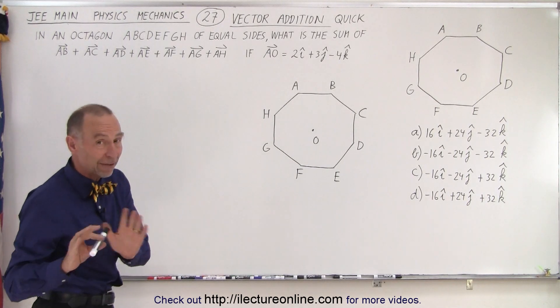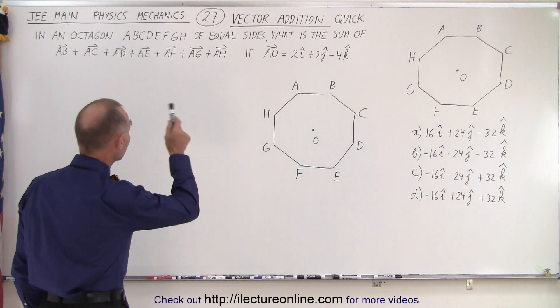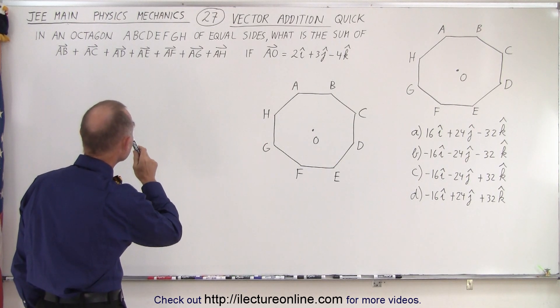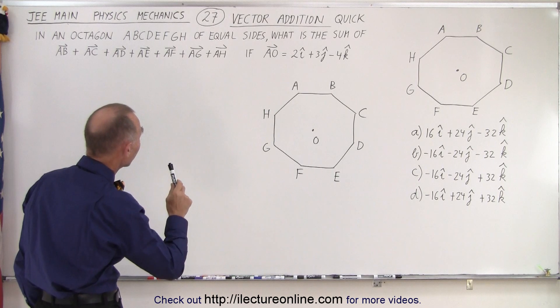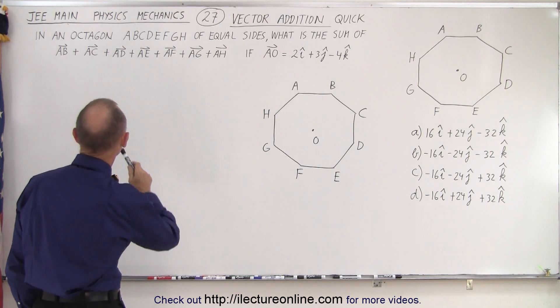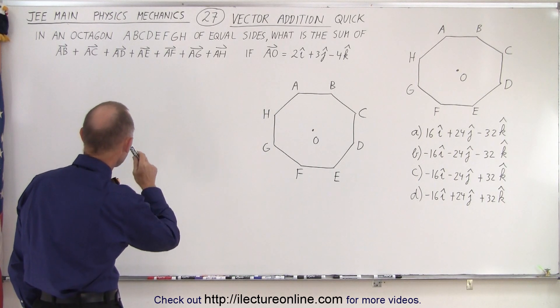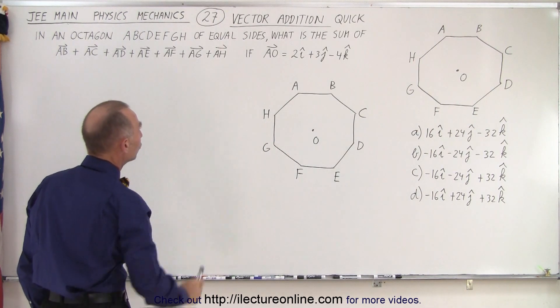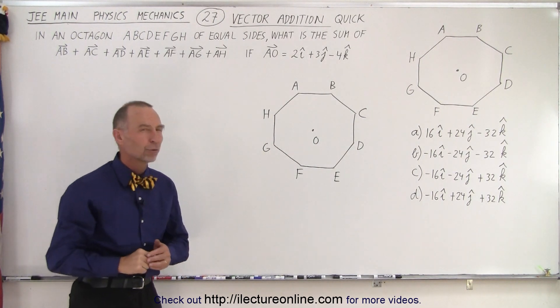Let's read it together in case you haven't seen this problem before. It deals with vector addition. In an octagon ABCDEFGH of equal sides, what is the sum of AB + AC + AD all the way up to AH, if they give you that A to O is 2i plus 3j minus 4k?